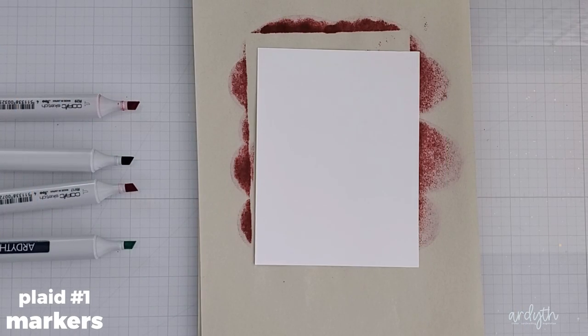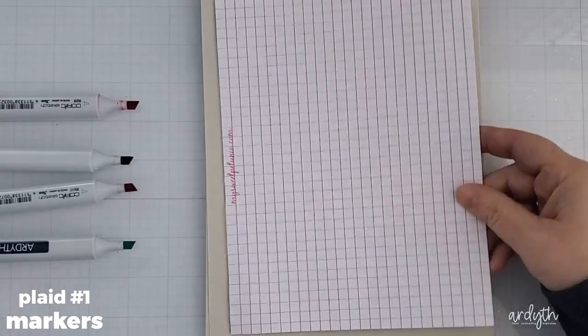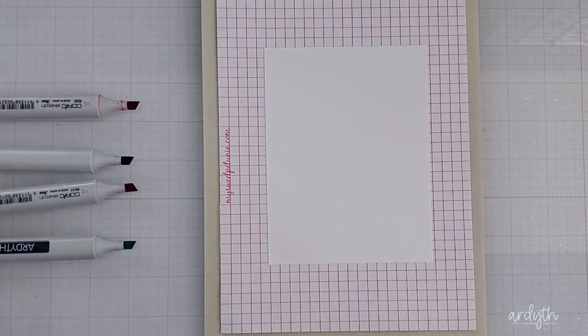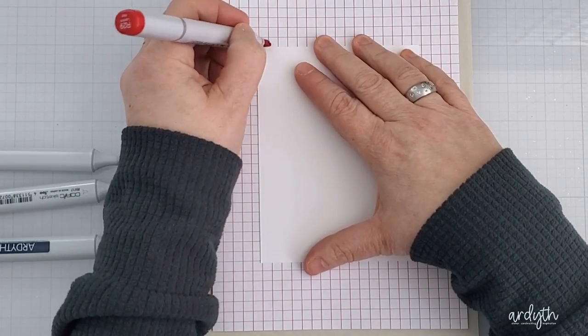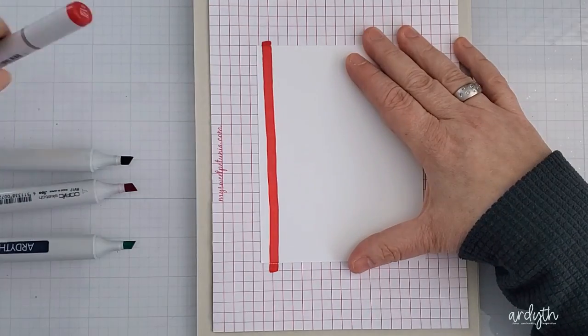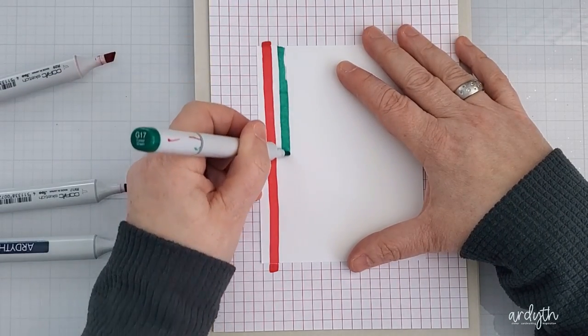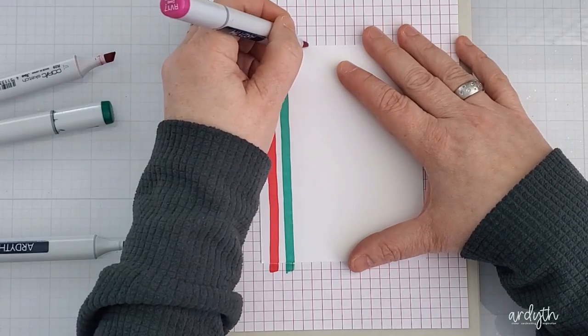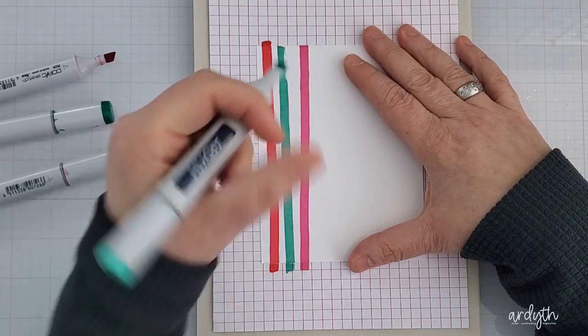Plaid number one: just grab your favorite coloring medium and make it yourself. Easy, right? I've got some Copics here in reds and greens and I put them in order along the side here with their caps off. Then I can just draw stripes from top to bottom.